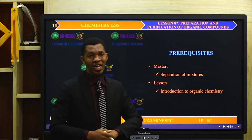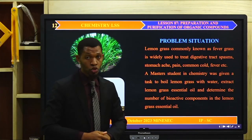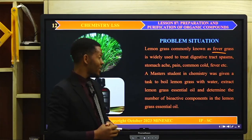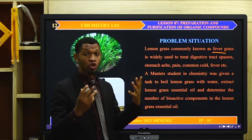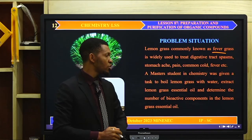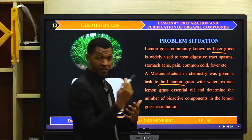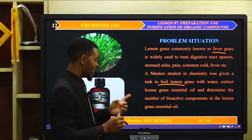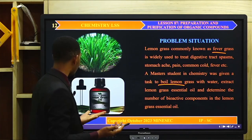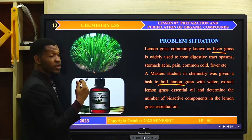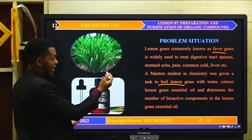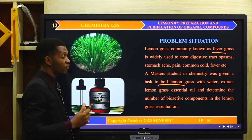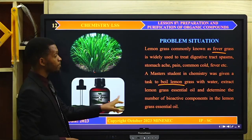Problem situation: Lemongrass, commonly known as fever grass, is widely used to treat digestive tract spasm, stomach pain, common cold, and fever. A master's student in chemistry was given the task to boil lemongrass with water, extract the lemongrass essential oil, and determine the number of bioactive components in the lemongrass essential oil. You can see a picture of the lemongrass — it is very common and there can be an extraction of essential oil from it.